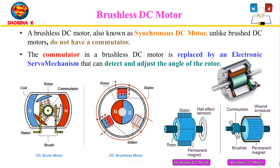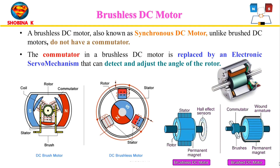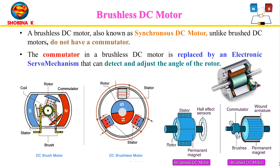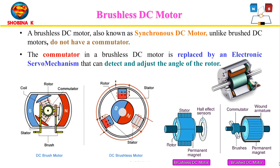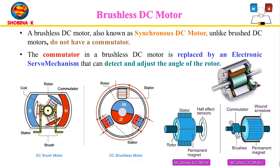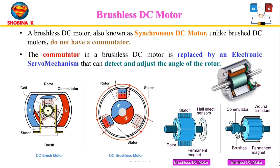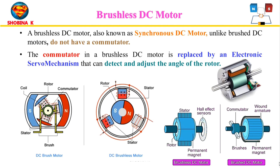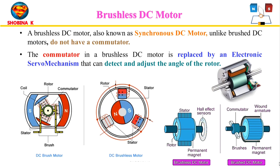A brushless DC motor is also known as a synchronous DC motor. Like a brushed motor, it works by altering the polarity of windings inside the motor, but it is essentially an inside-out brushed motor that eliminates the need for brushes. In a brushless DC motor, the permanent magnets are fitted to the rotor with the electromagnets on the stator. An electronic speed controller commutates the charge to the electromagnets in the stator to enable the rotor to travel 360 degrees. The commutator is replaced by an electronic servo mechanism that can detect and adjust the angle of the rotor.